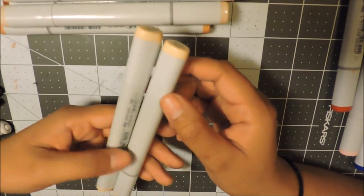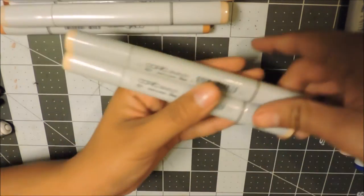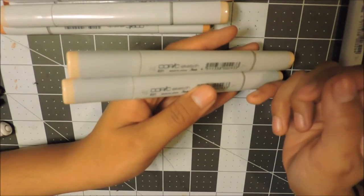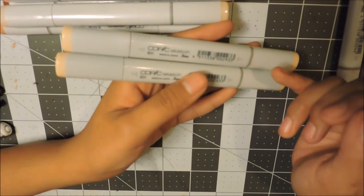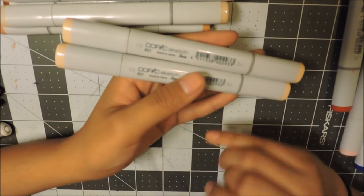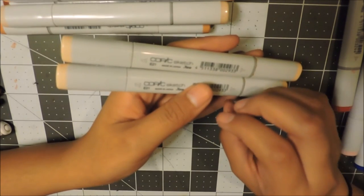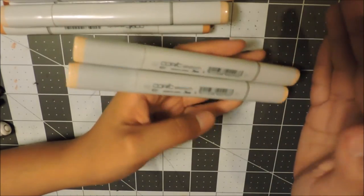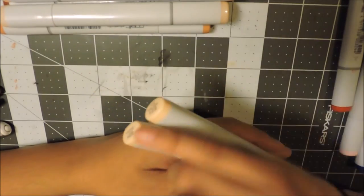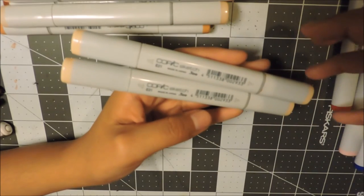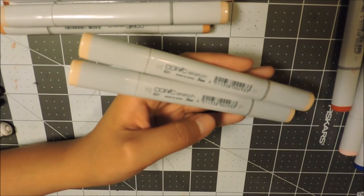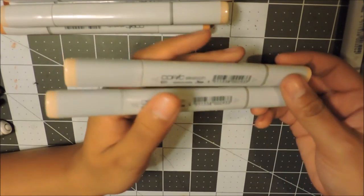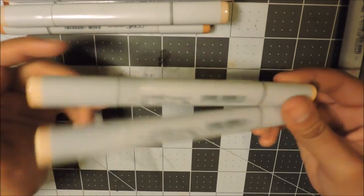I have E21 soft sun and then E21 baby skin pink. So these are both E21s, they just have different names. I believe I got the baby soft pink by itself and then in the skin set it came with the soft sun. I didn't realize it because I had memorized the name and not the numbers.